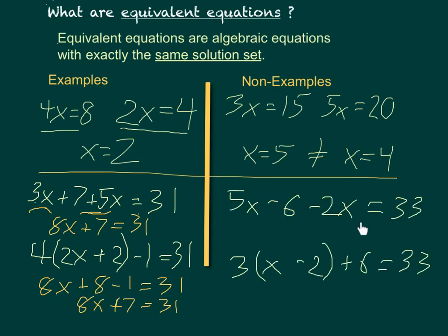If we look at these two, however, we'll notice they have some similarities, but these are not going to be equivalent equations. Again, I'm going to combine my like terms and simplify. 5x and minus 2x gives me 3x, then minus 6 equals 33.